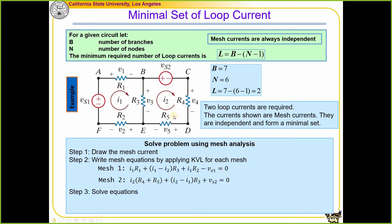Similarly, for the second mesh equation, starting from one node: the voltage drop on R4 is I2·R4, the voltage drop on R5 is I2·R5, combining to I2·(R4+R5). The voltage drop on the shared resistor R3 is (I2−I1)·R3, because I2 is going upward while I1 is going downward in that branch. The remaining voltage drop from the source Vs2 brings the equation to zero. This is how we find the mesh or loop equations; after obtaining them, the next step is to solve them.